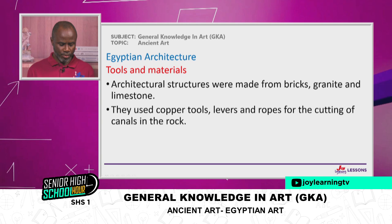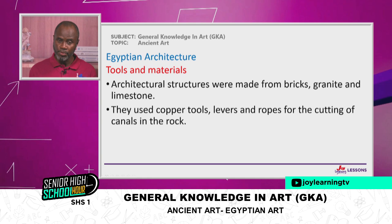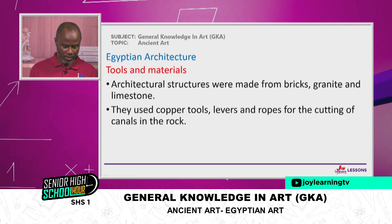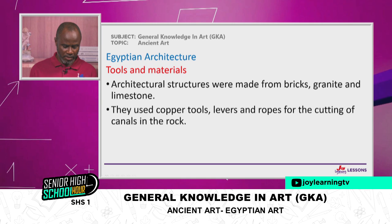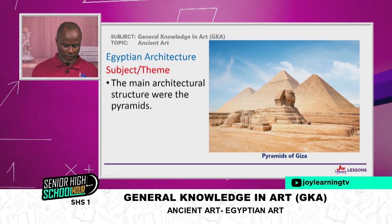Now let's look at Egyptian architecture. The main materials were bricks, granite, and limestone, and the main tools used were copper tools, levers, and ropes for the cutting of canals in the rocks. A lever is a form of simple machine — it's not a human liver — but you can see it was a simple tool used by the Egyptians.